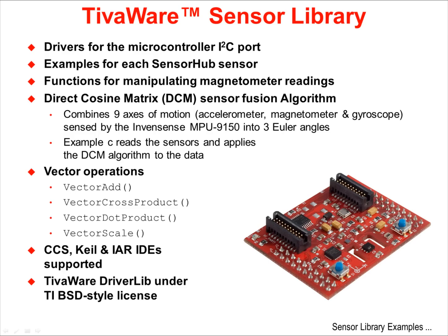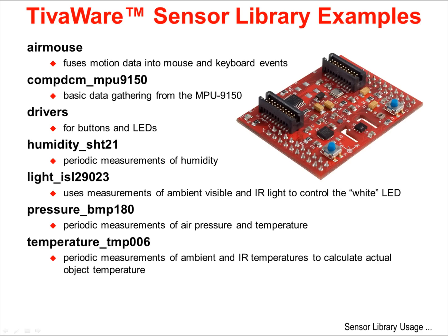All three development environments are supported and the driver library is under a BSD type license. Included SensorHub examples are the AirMouse, which shows off the DCM algorithm; comp DCM under MPU 9150, which demonstrates basic data gathering from the MPU 9150 motion sensor; drivers for the buttons and LEDs; humidity under SHT21 to perform periodic measurements of humidity; light under ISL 29023 that uses measurements of ambient light to control the launch pad LED; pressure under BMP 180 to demonstrate air pressure and temperature measurements; and temperature under TMP 006 to periodically measure and calculate the temperature of an object.